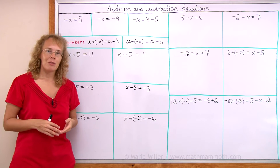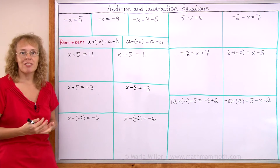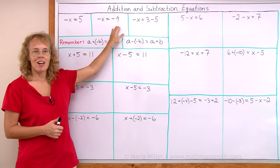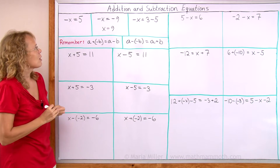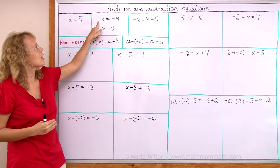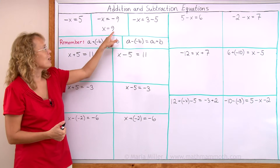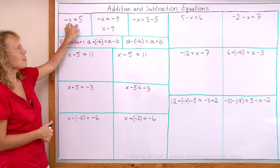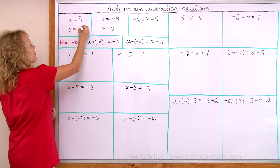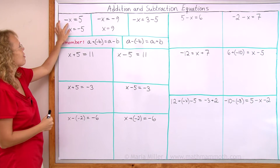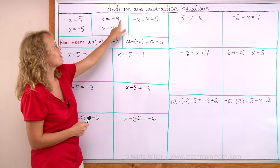We will start with an important principle concerning negative x, or the opposite of x. If you have an equation like negative x equals negative 9, how do we solve it? It's very simple. You can think of the negative sign as 'opposite' — the opposite of x is negative 9. What number has an opposite of negative 9? The opposite of 9 is negative 9, so x equals 9. Similarly, if opposite of x is 5, then x must be negative 5. Whenever negative x equals some number, the solution is the opposite of that number.